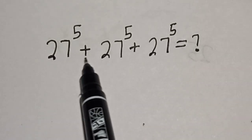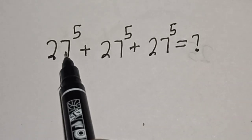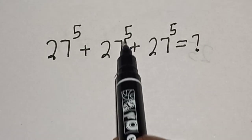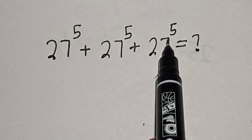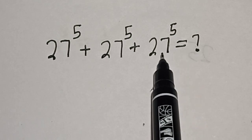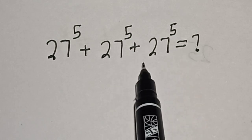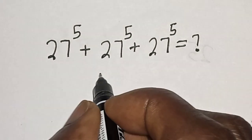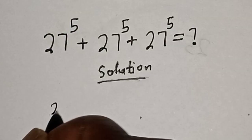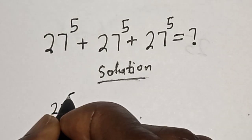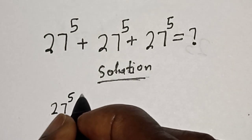Hello, welcome to Magis. 27 raised to power 5 plus 27 raised to power 5 plus 27 raised to power 5 is equal to what? Like, share, comment and subscribe. Solution: 27 raised to power 5 is common, let's bring it out.